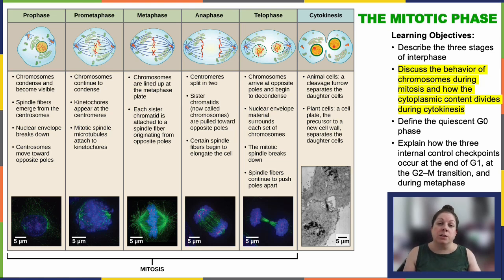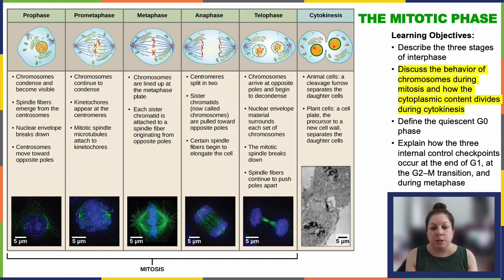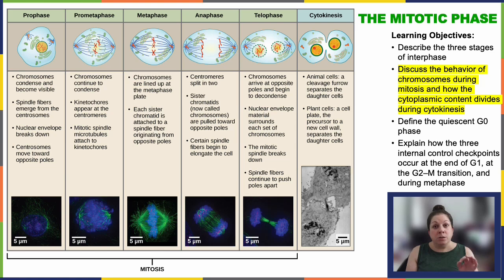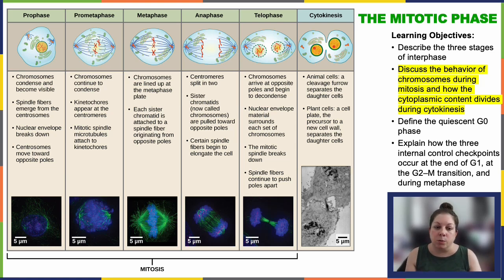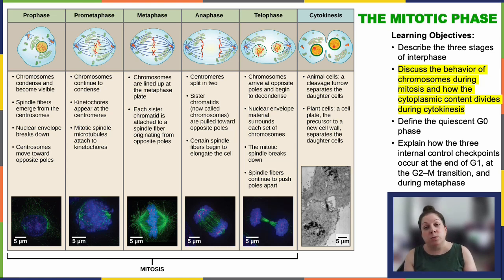Prometaphase continues the process. The nuclear envelope completely vanishes. The mitotic spindle develops fully, and the chromosomes become even more condensed — we really start recognizing that shape. Sister chromatids will attach to spindle microtubules via kinetochores.